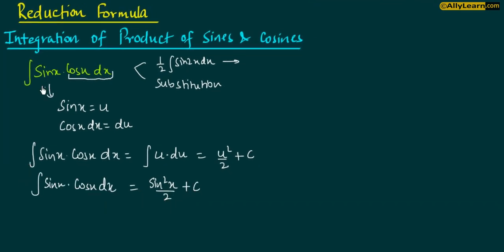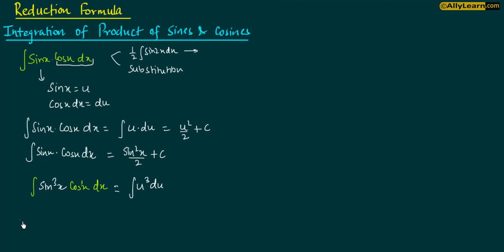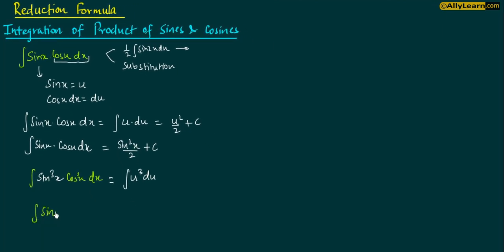अब देखिए friends, मैं sin की power बढ़ा देता हूं. अब sin की power 3 है, cos की power 1 है. तो क्या आप यह procedure follow कर सकते हैं? We can substitute sin x equal to u, cos x dx becomes du and we will have u³ du. तो इसका मतलब, sin की power कोई भी हो, हम एक general power m ले सकते हैं and we can solve this by substituting sin x equal to u.